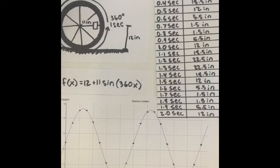So the minimums and maximums are 11 seconds away from, or 11 inches, my bad, 11 inches away from the midline.